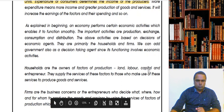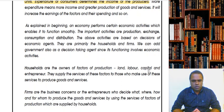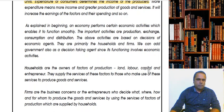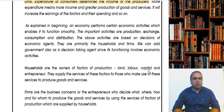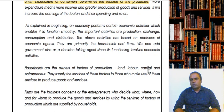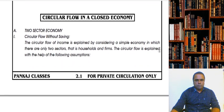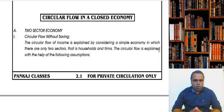This chapter covers four different short notes. Number one: circular flow of national income in a two-sector economy, divided into two parts — circular flow without savings and circular flow with savings. Then we have circular flow of national income in a three-sector economy. We'll start directly with the first short note: circular flow in a closed economy.